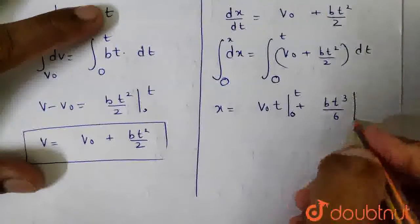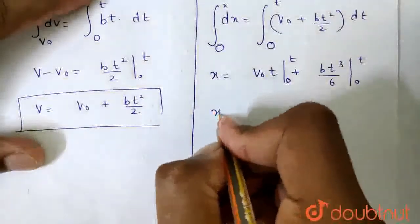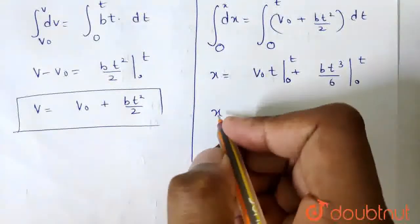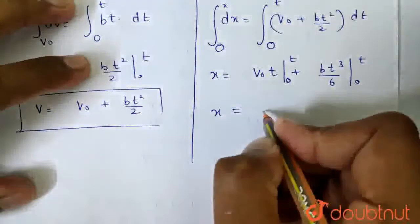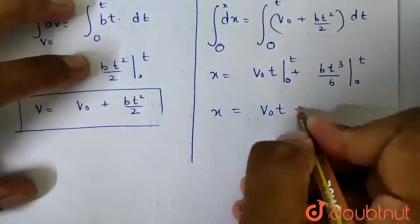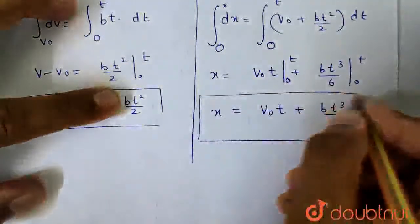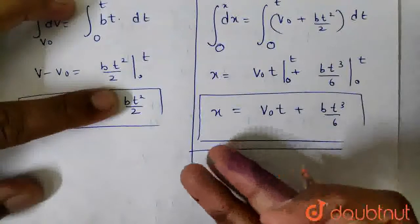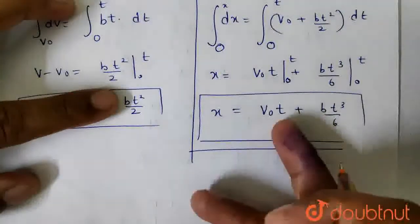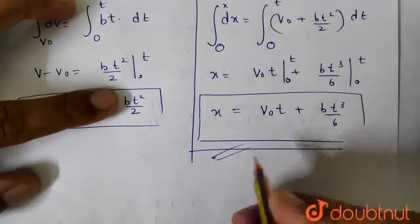x is equal to v0t plus bt cube by 6, from 0 to time t. So the x value is v0t plus bt cube by 6. This is the relation between x and time, so this is my final answer.